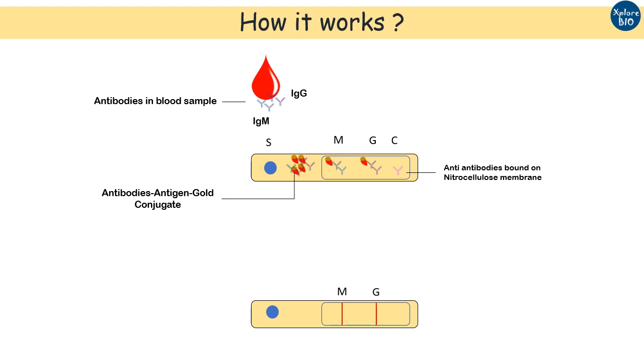The last line is the control line that has anti-IgG antibody of rabbit as a positive control of the test run. After the run is complete, wait for 15 to 20 minutes before interpreting the results.